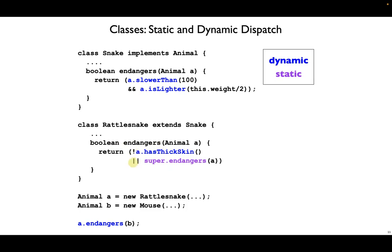Or rattlesnake endangers returns true whenever it's the case that any snake can endanger that animal. So we call super to get at the snake implementation of the endangers method. And at the bottom, we declare two animals. Animal A is a rattlesnake, and animal B is a mouse. And lastly, we call A dot endangers B.